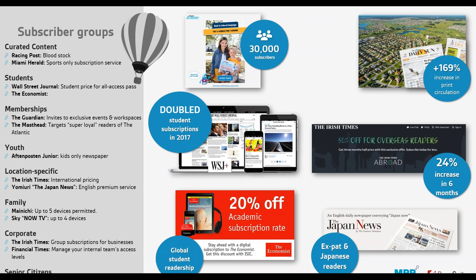I really love the location-specific examples. The Irish Times, for example, is doing overseas readers — Irish Times Abroad — and we've had a 24 percent increase in subscribers just over the past six months. Yomiuri has also launched the Japan News, which is an English version of the Japan News, popular in Japan for young people looking to learn English combined with business knowledge, and for people who want English-language content. These are really nice international packages.